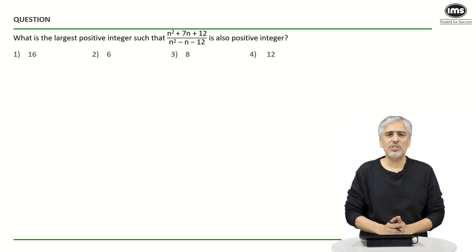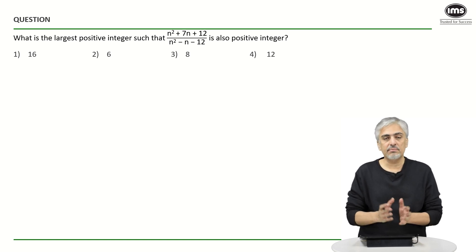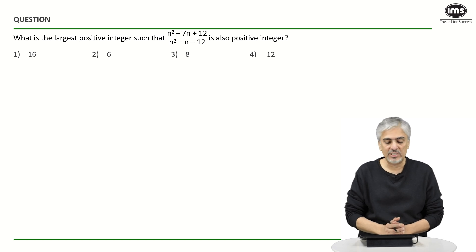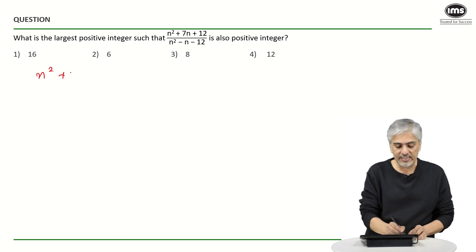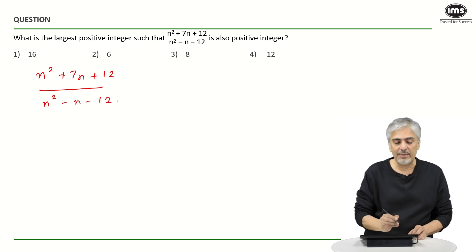Hi everybody. Welcome to the next question from Best of CAT Algebra. Here we have a question where they've asked us to find the largest positive integer such that this particular equation n squared plus 7n plus 12 upon n squared minus n minus 12 is also a positive integer. That means n squared plus 7n plus 12 upon n squared minus n minus 12 should remain positive.